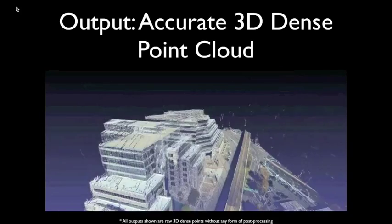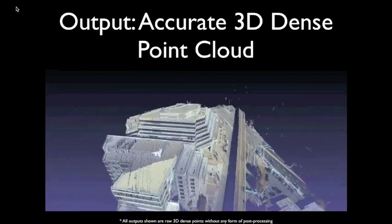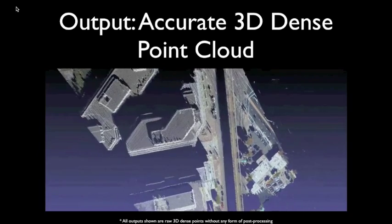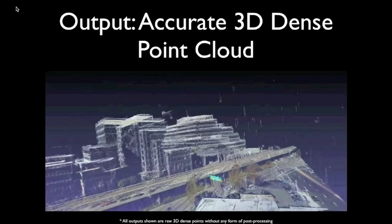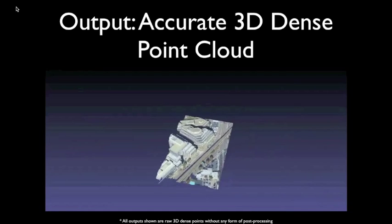Homogeneous regions, such as rooftops, are correctly reconstructed to be planar and smooth. The occluded regions are clean and free from clutter, as can be seen under the road surfaces and traffic signs.